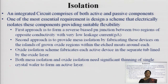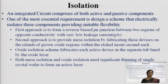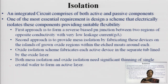When you fabricate different devices within the integrated circuit, you need to isolate them. An integrated circuit basically comprises active and passive components, and one essential requirement is to provide proper electrical isolation between these components for suitable flexibility. The first approach is to provide a reverse-biased P-N junction between two regions of opposite conductivity, which results in very low leakage current in the order of picoamperes.